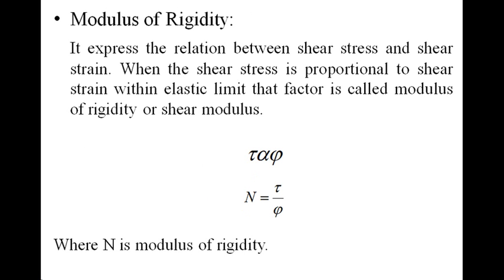The third type of elastic constant is modulus of rigidity or shear modulus. This expresses the relation between shear stress and shear strain. The shear stress is proportional to shear strain within the elastic limit. If we denote shear stress by τ and shear strain by φ, then τ is proportional to φ, and the ratio τ/φ equals n, where n is the modulus of rigidity.